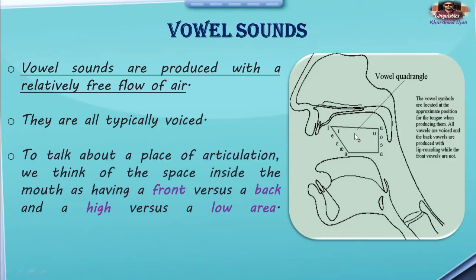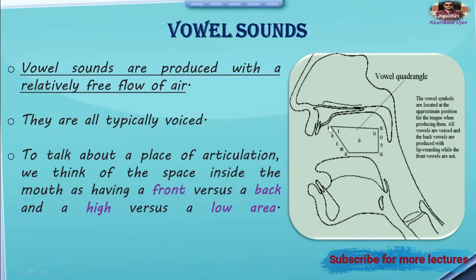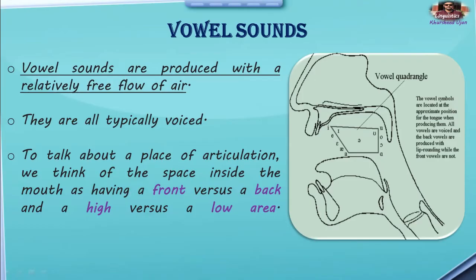Regarding place of articulation, we think of the space inside the mouth as having a front versus a back and a high versus a low area. When we pronounce these vowel sounds, we divide the positions of the mouth — high front, mid front, lower front — and similarly, high back and lower back positions. This division is used when producing vowel sounds.